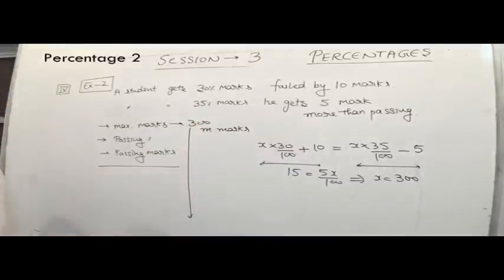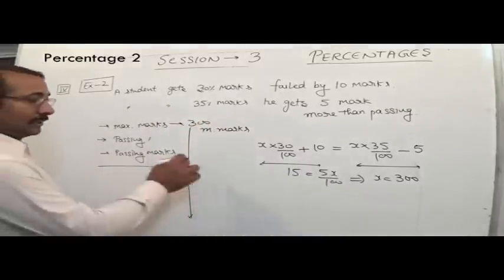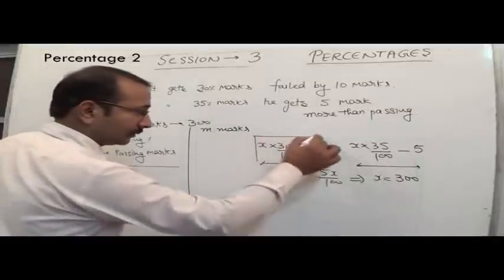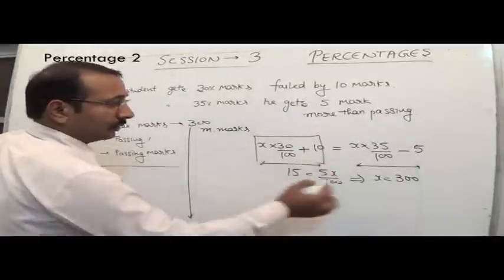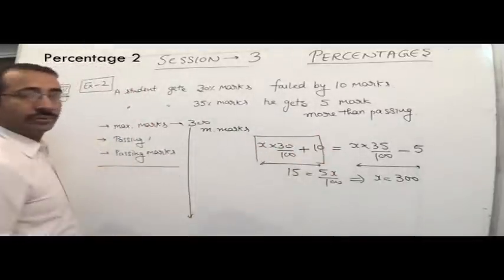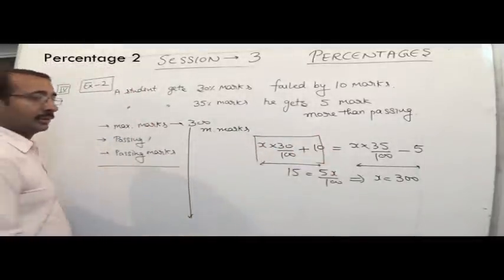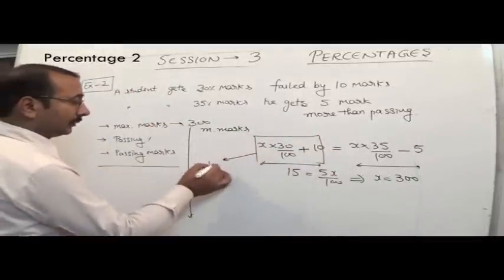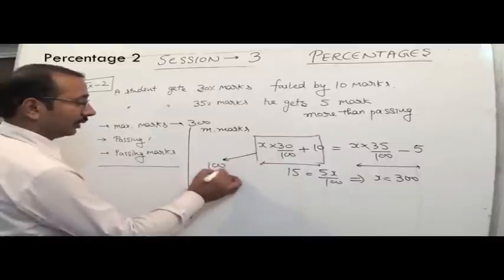We have to find the passing marks and the passing percentage. Putting x equal to 300: 90 plus 10 gives passing marks equal to 100.